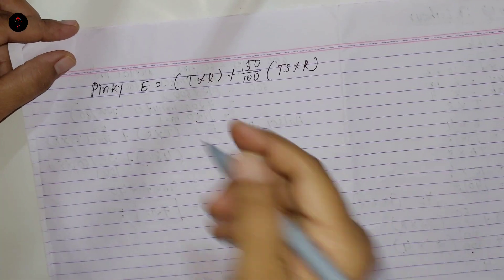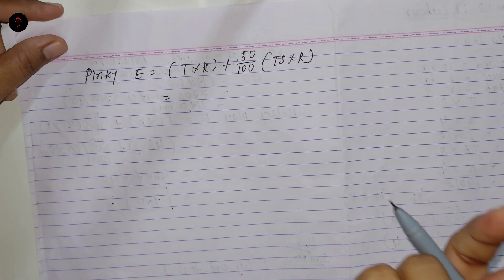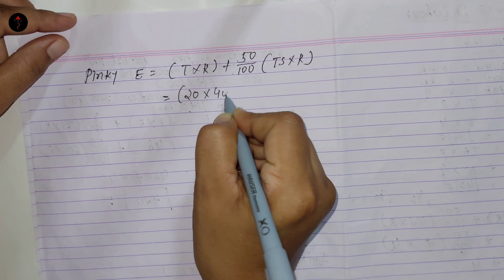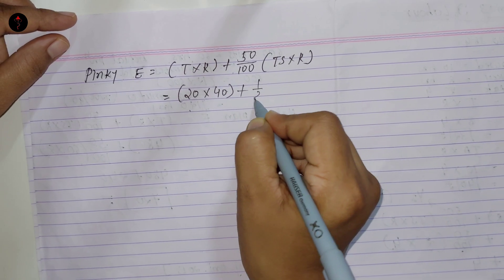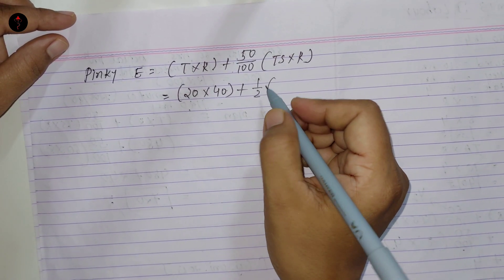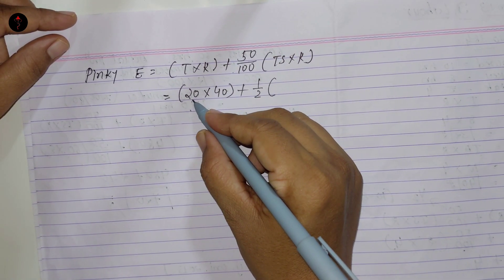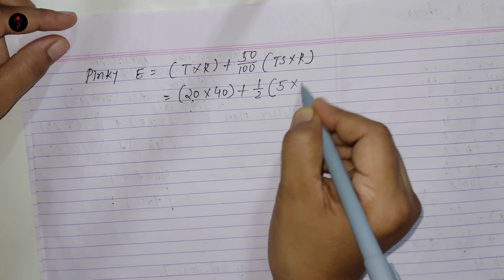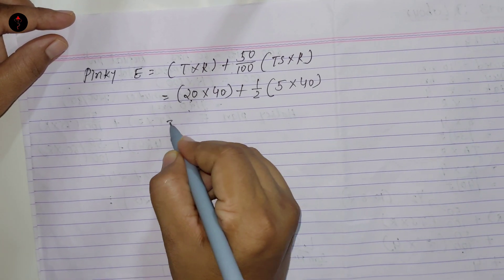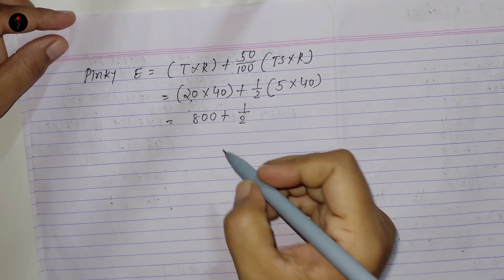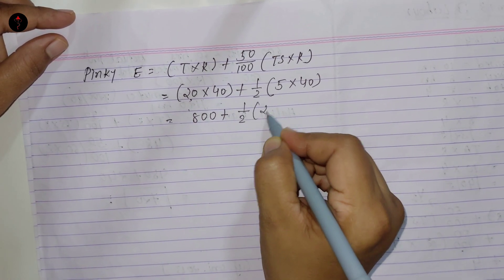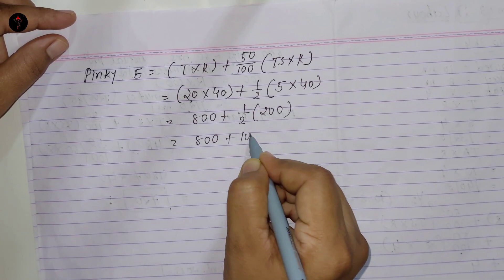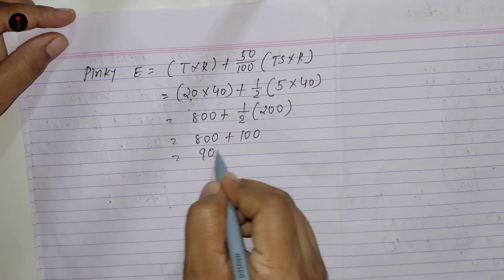For Pinky, time taken is 20 into 40 equals 800, plus 50 percent of time saved which is 5 into 40 equals 200. So 800 plus 100, your answer is Rs. 900.